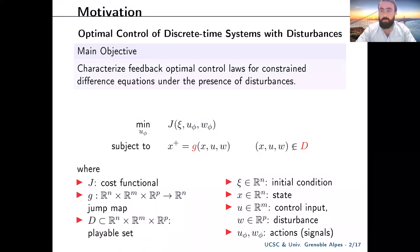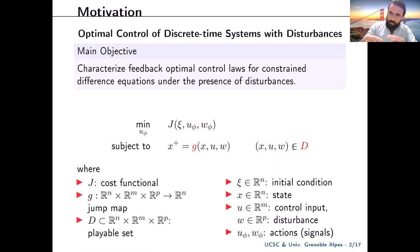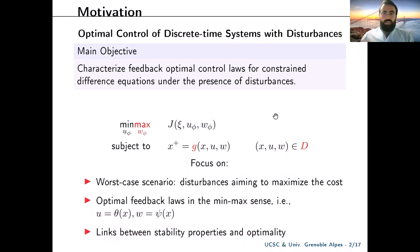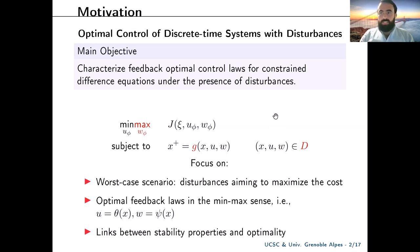Consider a cost functional J that depends on an initial condition and input actions. We want to find the input controller u that minimizes the functional in the presence of a disturbance action w, subject to discrete dynamics such that the state after each jump is given by a map of the state, input, and disturbance when those three are found inside a playable set. We are interested in the case where the disturbance seeks to maximize the cost, and we want to solve the game in the minimax sense as a feedback law while finding connections between optimality and stability.